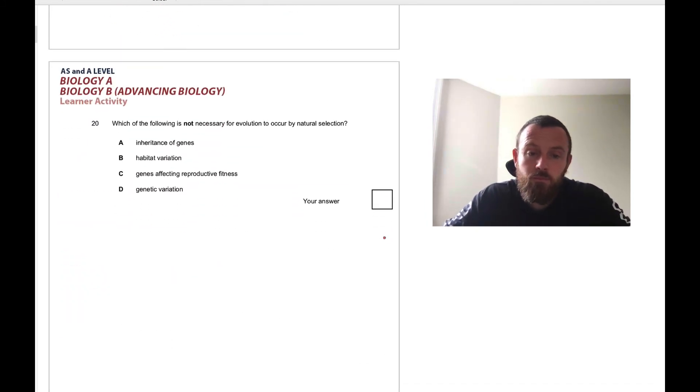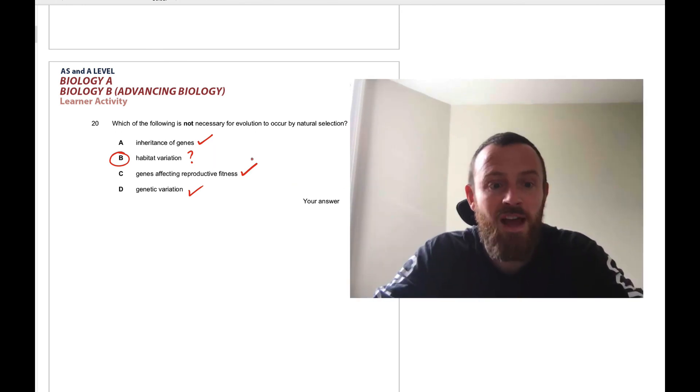Which one of the following is not necessary for evolution to occur by natural selection? Inheritance of genes, that's necessary. Habitat variation, not really, let's put a question mark and keep going. Genes affecting reproductive fitness? Yeah, genes have to have an impact on which organisms survive and which don't. And we need variation, otherwise there would be no ability to select some organisms with better genes than the others. So it is B, it's not necessary. It could help it but it's not essential.